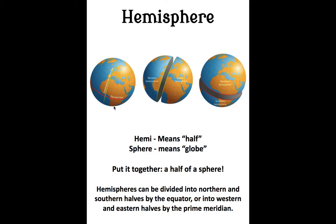You'll see there's a green line here and a red line here. Those are two different ways that we can chop up a globe. Hemispheres can be divided into northern — that's the top half — and southern halves, by this line here called the equator. And it can be chopped up into eastern and western halves by this green line here called the prime meridian. So we can chop up the globe so that it has a top half and a bottom half, or an eastern and western half, or a right and a left half.